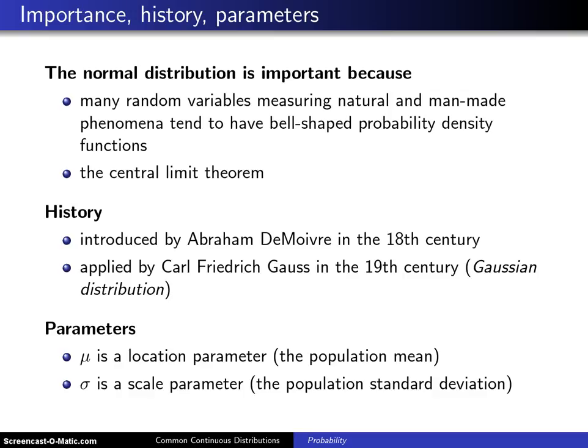Second, it is important because of something known as the central limit theorem, which is covered in chapter 8. To sum up the central limit theorem: if you have a large number of random variables having any distribution with finite mean and finite variance, and you add up a lot of them, the distribution of that sum of random variables will look bell-shaped.